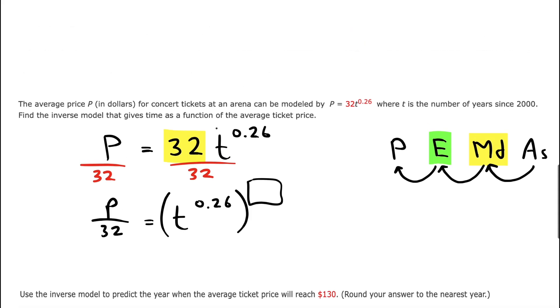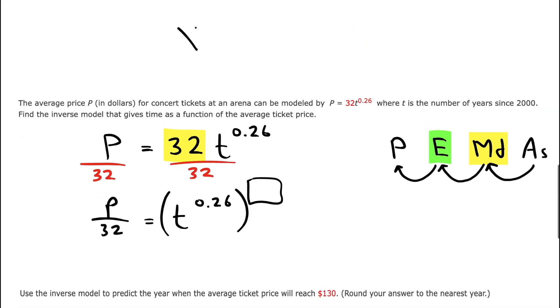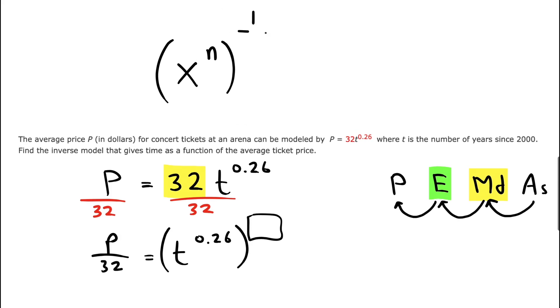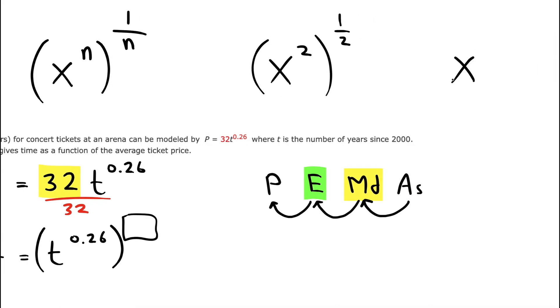There's a general rule that whenever you're raising x to the n to a power that would cancel n, we have to raise it to the power of 1 over n. For example, if we want to cancel x squared, we would raise that to a 1 half power, which is basically a square root. If we have x to the third, we would want to raise it to the one third.